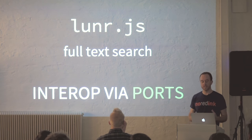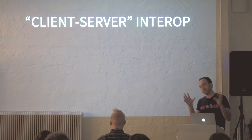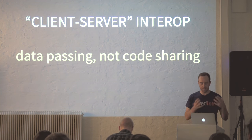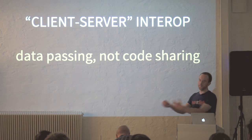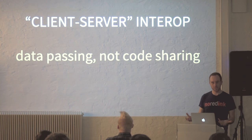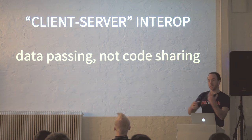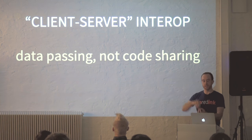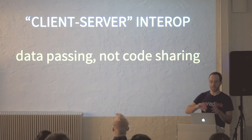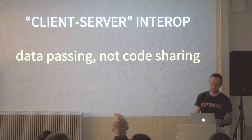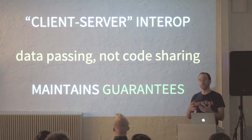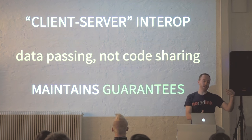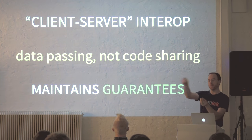We do JavaScript interop via ports. The way that ports work is a client-server style of interop — it's data passing, not code sharing. We're actually sending data from Elm to JavaScript and then receiving data back, sort of like throwing it over the fence and then getting it back. Much like a client-server interaction where you're sending data to the server and getting data back without any possibility of crashing. You can do that same metaphor talking to JavaScript — you're not actually going over a network, but it gives you the same characteristics of reliability. This means we get to maintain our guarantees: all the Elm code still has exactly the same reliability regardless of whether there's that interop step.